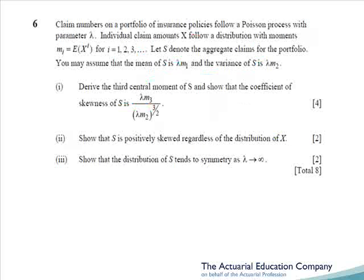Question 6 tests the collective risk model, covered in chapter 7 of the notes. Claims follow a Poisson process with parameter lambda, and individual claim amounts are x, whose distribution we're not told. We're asked to derive the third central moment of S, and show that the coefficient of skewness is the formula given. The first step would have been to turn to page 16 of the tables, which does actually give the third central moment for a compound Poisson as lambda times m3. But given that the question asks us to derive this, we need to do a little bit more work.